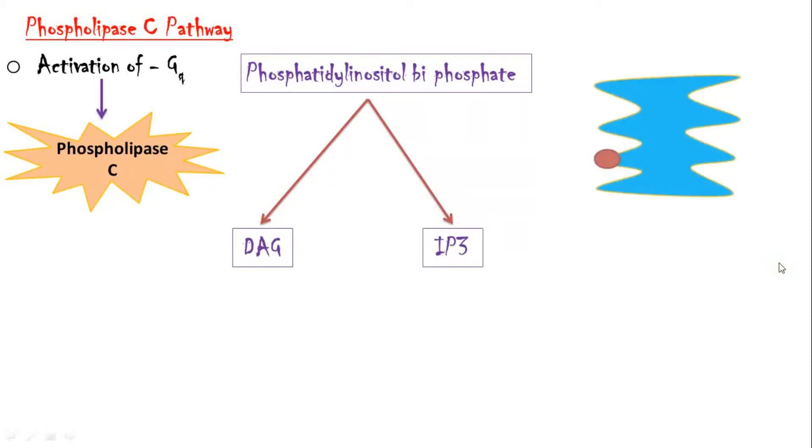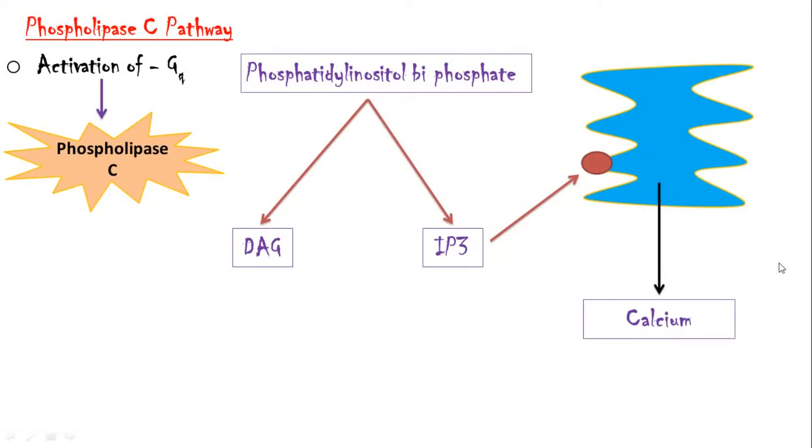The IP3 receptor, which is a ligand-gated calcium channel, is located on the membrane of the endoplasmic reticulum. Binding of IP3 with its receptor causes release of calcium ions into the cytoplasm. Thus, the main goal of IP3 is to increase the cytosolic calcium ion concentration. These calcium ions aid in muscle contraction and activation of certain enzymes.